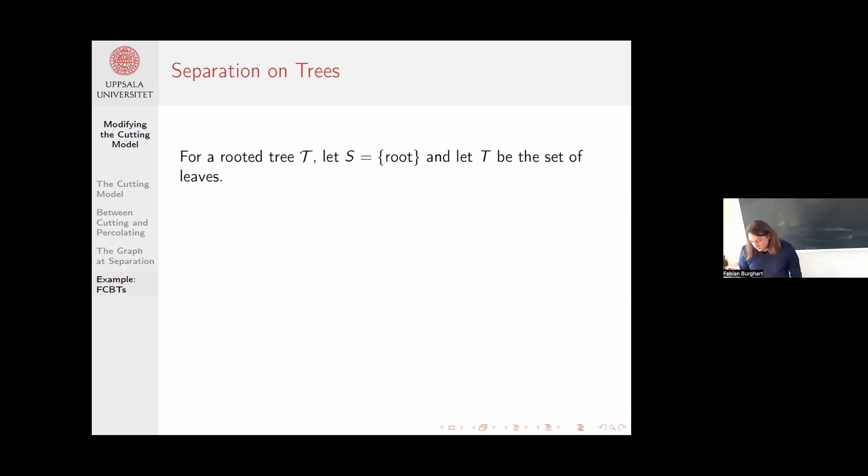Now let me conclude the talk by looking at an example. I want to look at rooted binary trees. But first, an observation that is true for rooted trees in general. This returns from the classical setting where we take a rooted tree, the root node is my only source. But now to make it more interesting, I define some targets, which will just be the leaves in the tree.